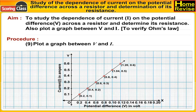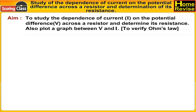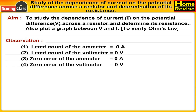Plot a graph between V and I. Observations: note the least count of the ammeter, least count of the voltmeter, zero error of the ammeter, and zero error of the voltmeter.